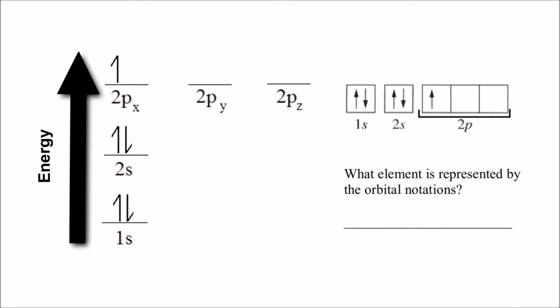Here's the horizontal method or the box method. Same thing, we've got the 1s filled, we've got the 2s filled, and then we've got the 2p here with only one electron in the very first one. This one would be our 2px, 2py, and 2pz. It is perfectly fine to bracket these and just call it 2p instead of doing 2px, 2py, 2pz every single time.